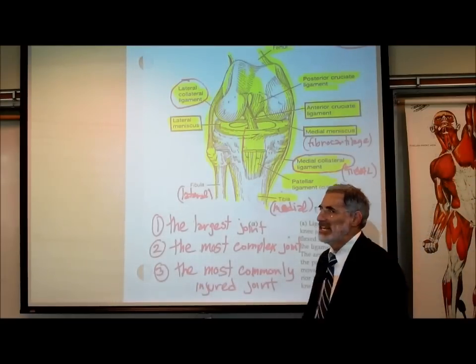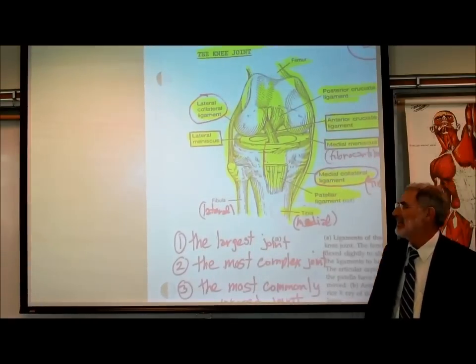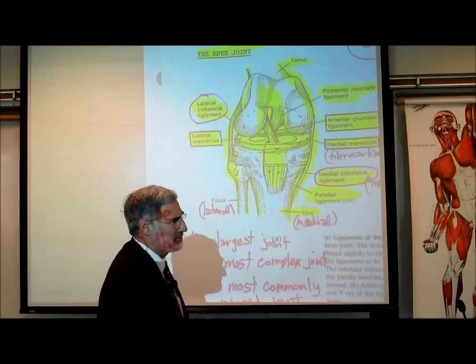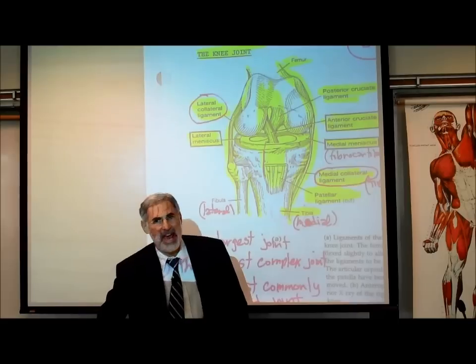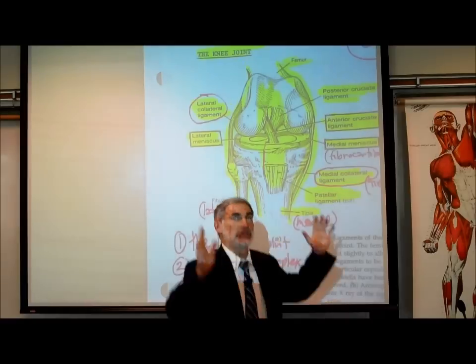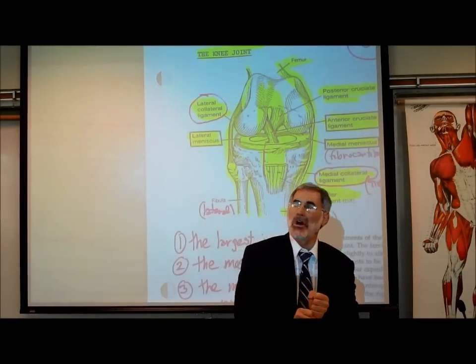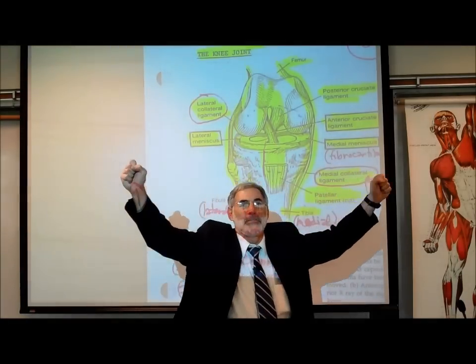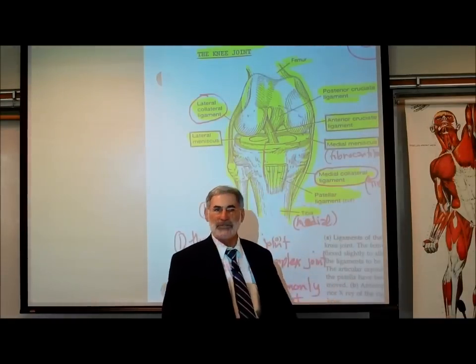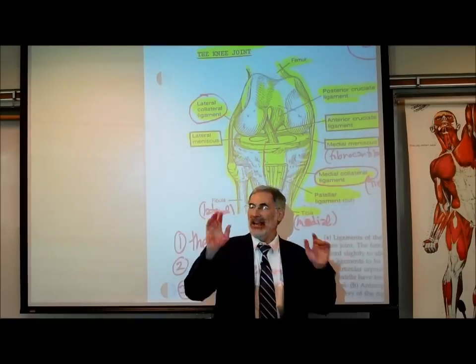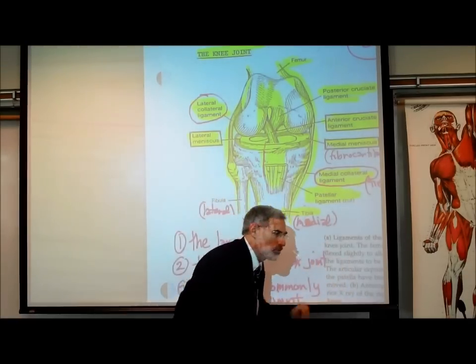There is a ligament running along the lateral side from the femur to the fibula called the lateral collateral ligament. There are a whole bunch of others, but those are the ones you should know. Why is the knee the most commonly injured joint? The knee has a big problem: it has to be flexible enough to allow us to run and jump, yet strong enough to hold the weight of our body.